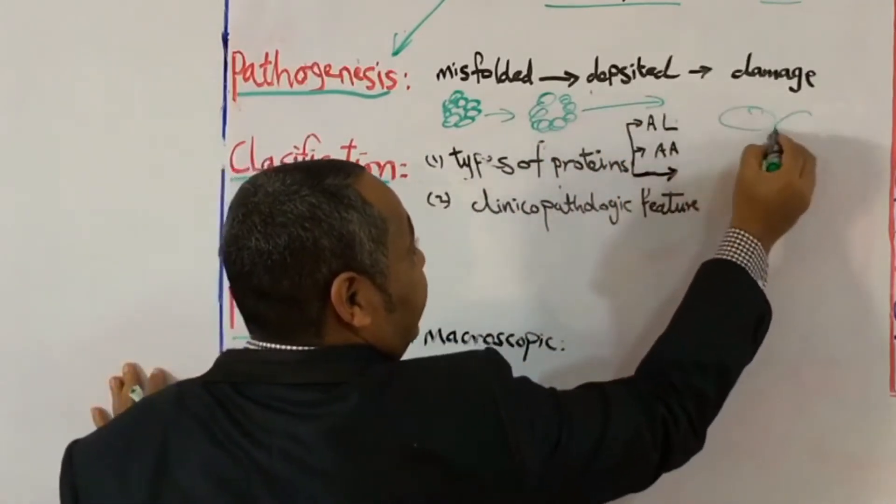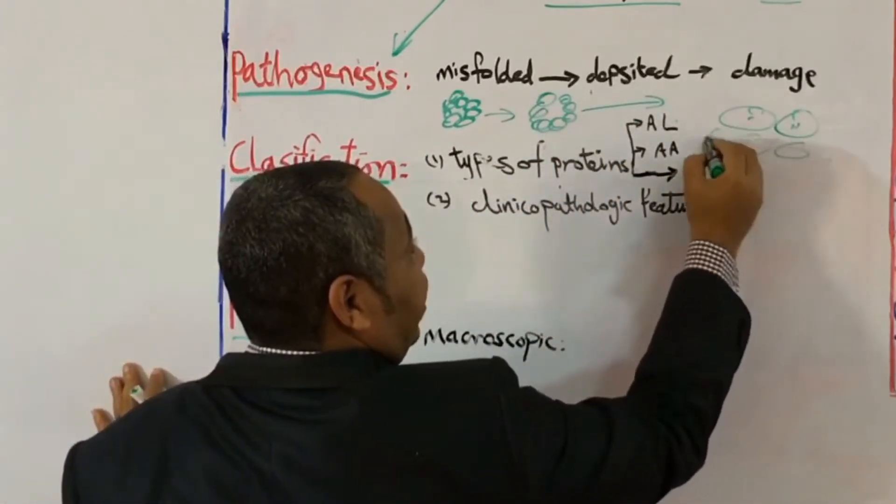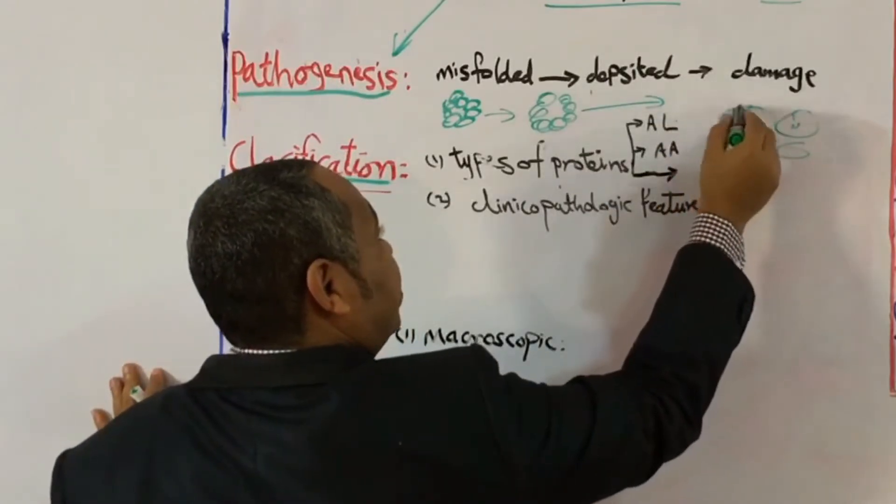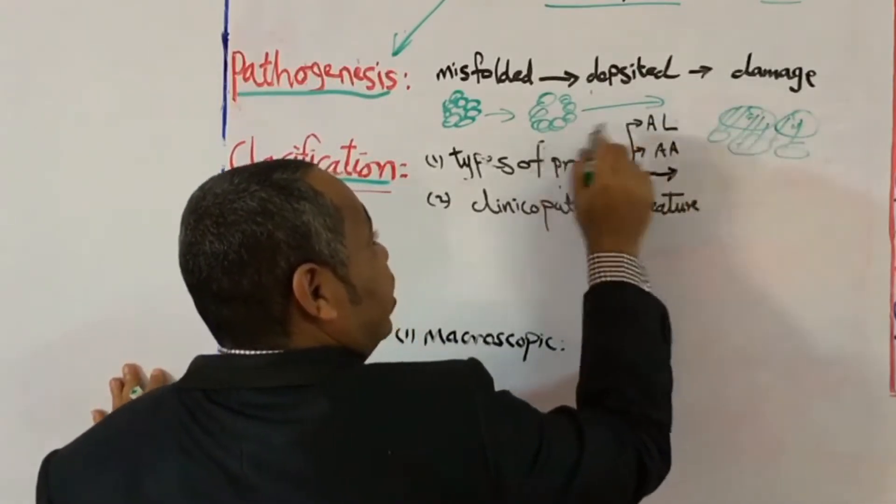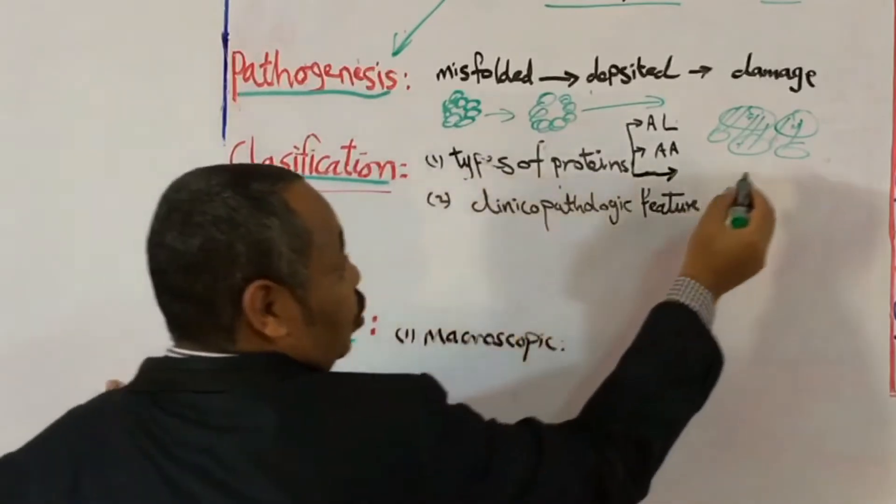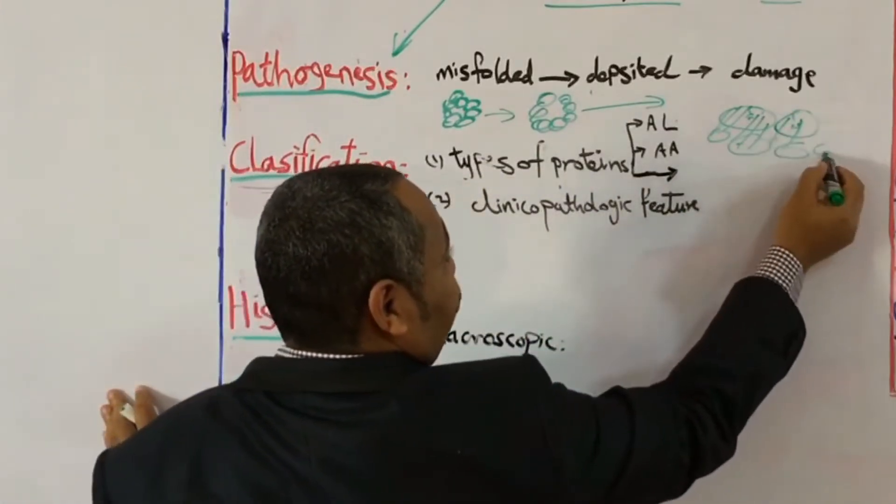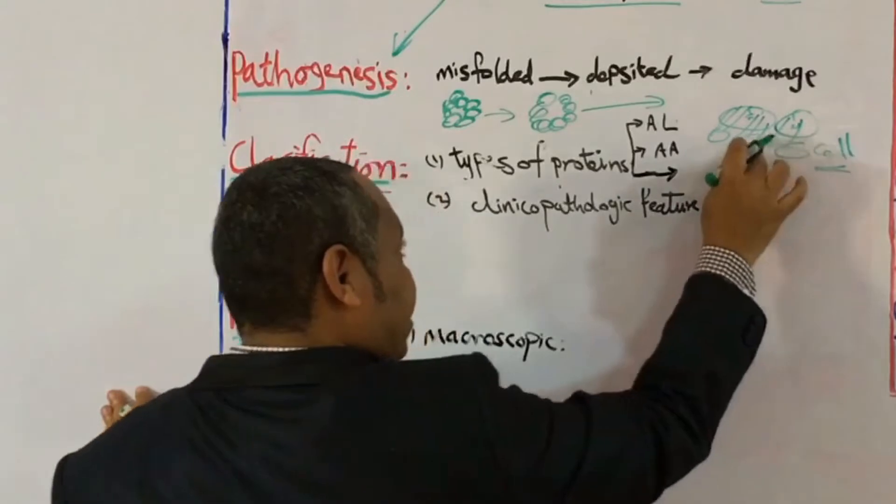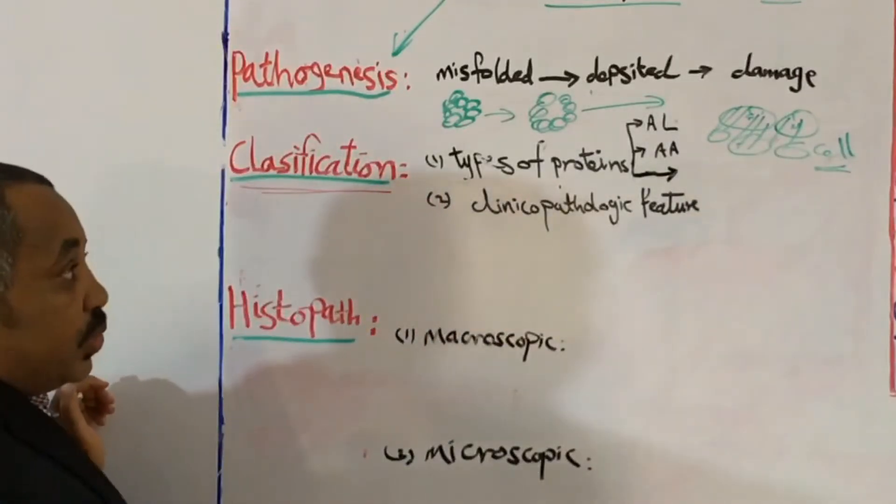So if these are cells, these are normal cells in any organ, deposition of this misfolded protein will result in damaging of this cell and cell injury. So as a result of that, the result of cell injury here, as you see, is that there is degeneration.